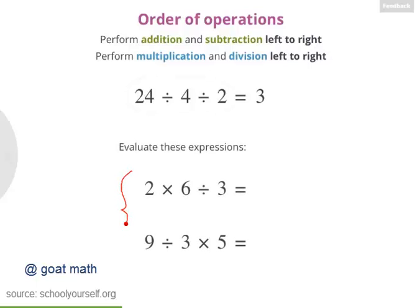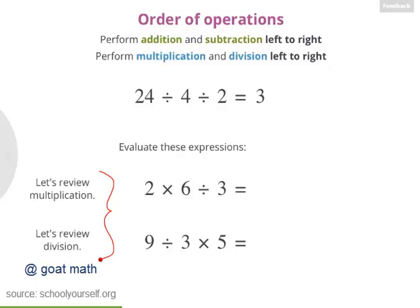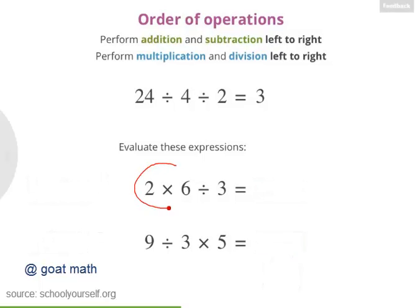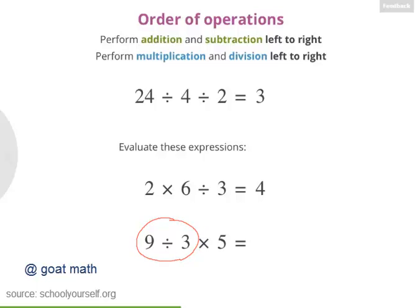Try evaluating a few more expressions with multiplication and division, working from left to right. Nicely done! 2 times 6 is 12, and then dividing by 3 gives you 4. And down here, 9 divided by 3 is 3, and multiplying by 5 gives you 15.